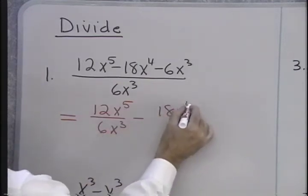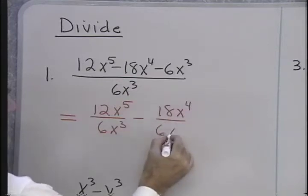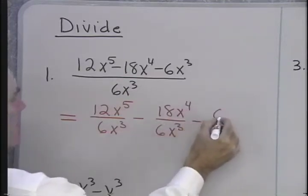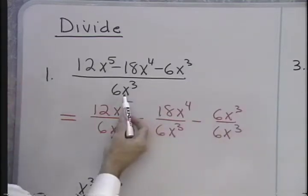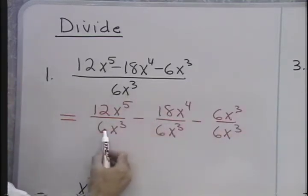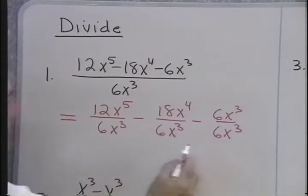So, here I'm going to have 12x to the 5th over 6x cubed, minus 18x to the 4th over 6x cubed, and then minus 6x cubed over 6x cubed. So, with this type of division, division by a monomial, what I do is divide each term in the numerator by that monomial.